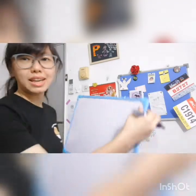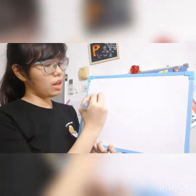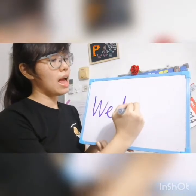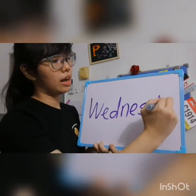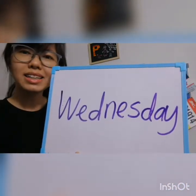But can you remember how to spell Wednesday? If you can't, don't worry. Let's spell together. Are you ready? Say it with me. 1, 2, 3 — W, E, D, N, E, S, D, A, Y. Wednesday.